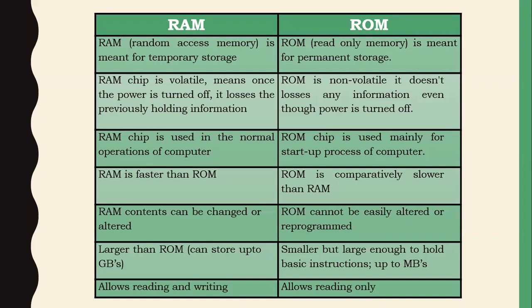ROM contains pre-written programs that are loaded into the operating system so the computer can start up and perform desired operations. This complete process is called the booting process. ROM chips are mainly used for the startup process, but ROM is slower compared to RAM. RAM content can be changed, added, or deleted, but ROM data cannot be edited since only reading is allowed. RAM is larger — storing data up to GBs — whereas ROM is smaller, storing data up to MBs.